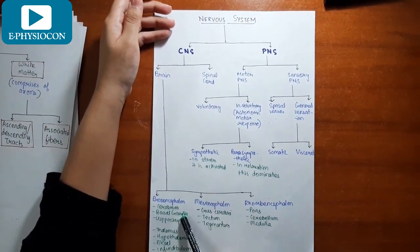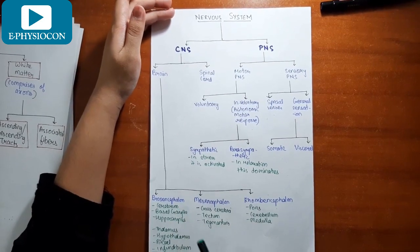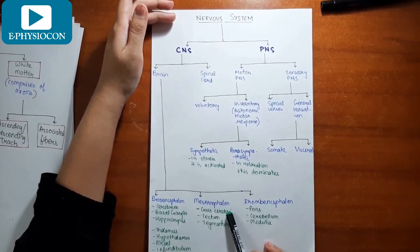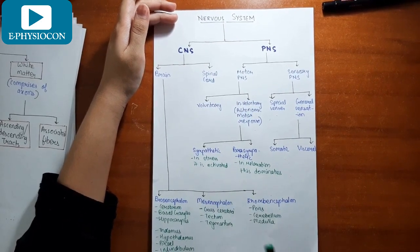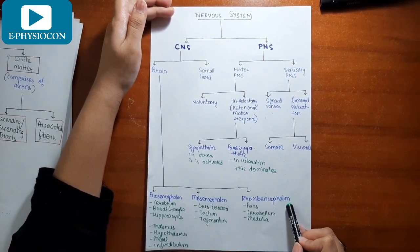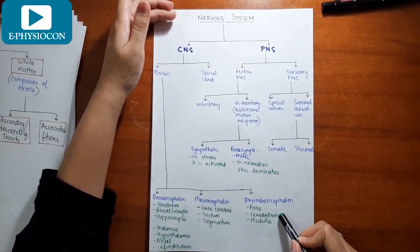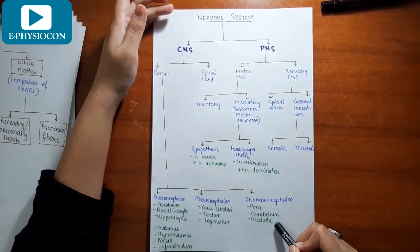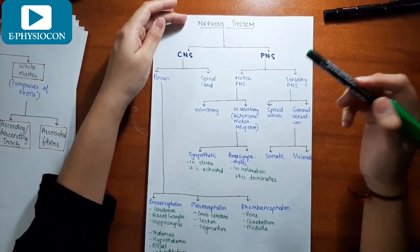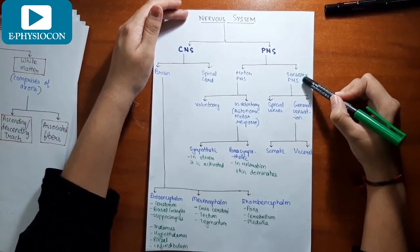The prosencephalon is the forebrain and it consists of the telencephalon and the diencephalon. The mesencephalon is the midbrain consisting of the crus cerebri, tectum and tegmentum. The rhombencephalon is the hindbrain which consists of pons, cerebellum and medulla. Now coming to the peripheral nervous system, it consists of the motor peripheral nervous system and the sensory peripheral nervous system.